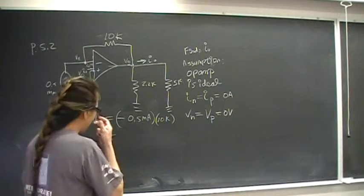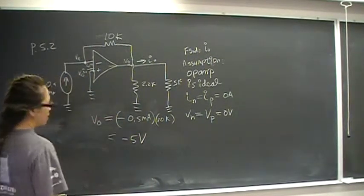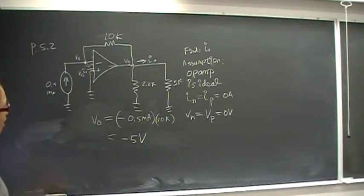So I should be able to do this in my head, but I find that I make a lot of mistakes with decimals, doing things in my head, but that should be negative 5 volts.